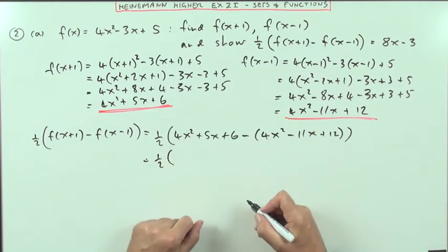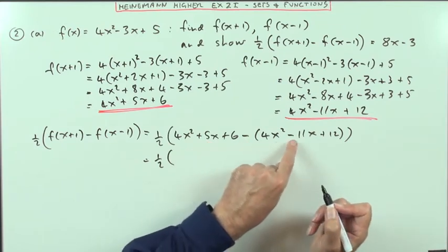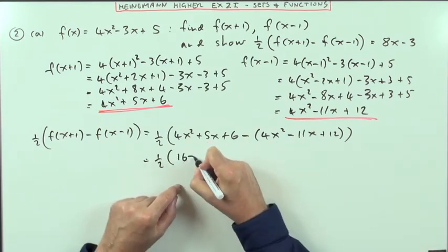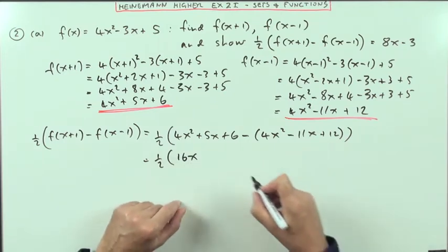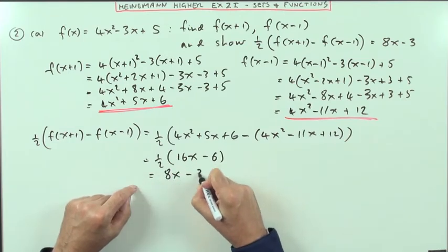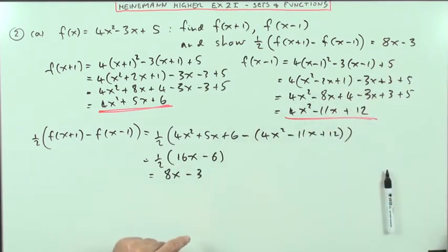4x take away the 4x, gone. 5x, take away the negative 11, that's 5 plus 11, so that's 16x. 6, take away the 12, negative 6. And then half of that's going to give you 8x - 3, as required. So that was part A.